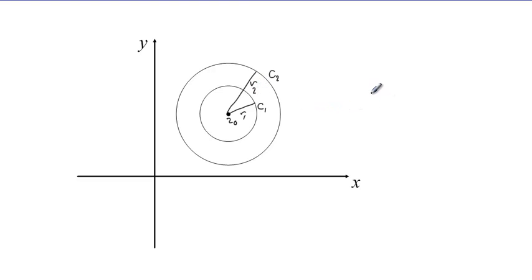We have a cycle C_1 and another cycle C_2 with radii r_1 and r_2. In this case, r_1 is less than r_2. The function in this particular case will be considered for absolute value of z less than r_2 and greater than r_1. In this case, we come up with a region of this nature which looks like a punctured disk.